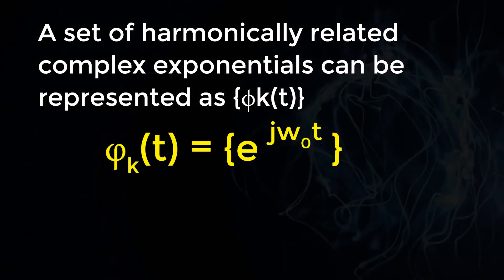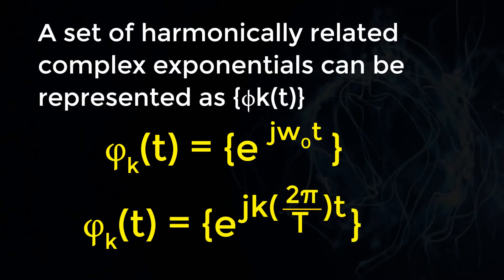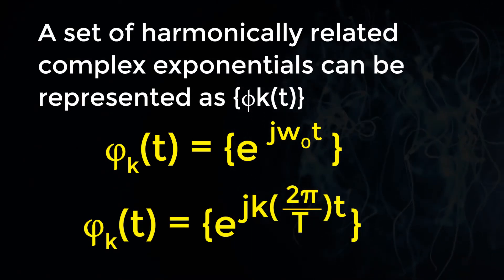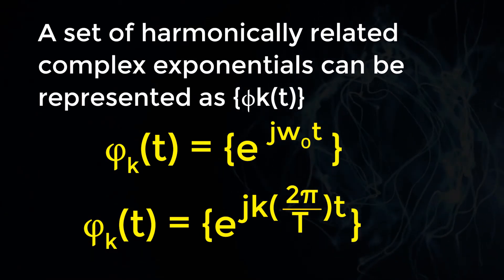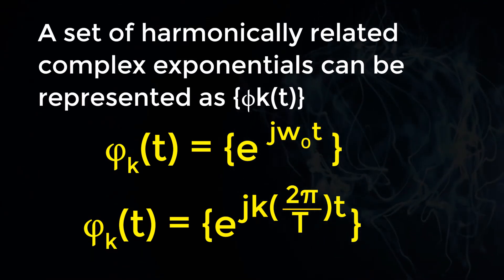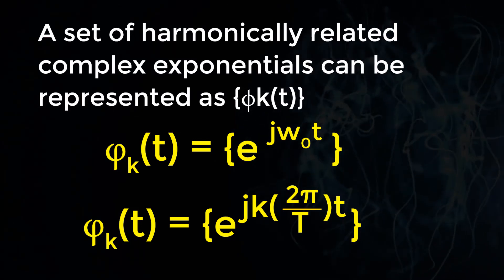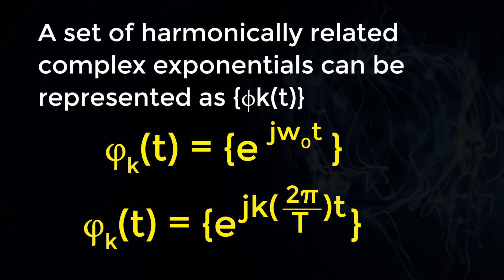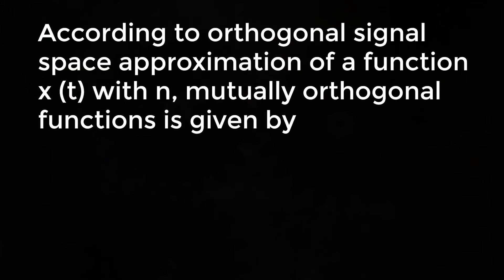A set of harmonically related complex exponentials can be represented as φ_k(T) = e^(jkω₀T), which equals e^(jk · 2π/T · T), where k = 0, ±1, ±2, and so on. All these signals are periodic with period T.